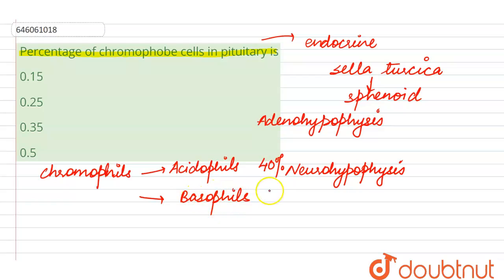Whereas the other part, that is the chromophobe cells, will form approximately 50 percent of the cells in the pituitary. So here we can see that option number four can be marked as the right answer.